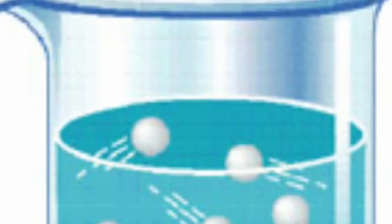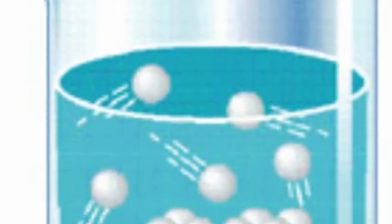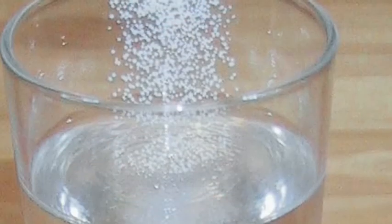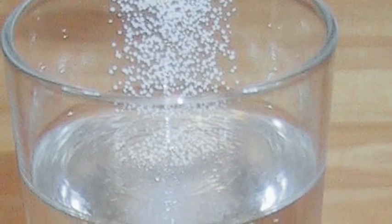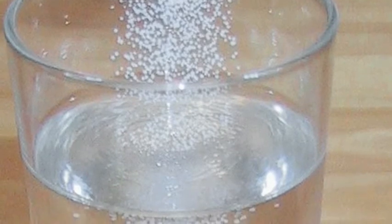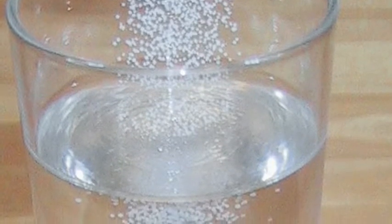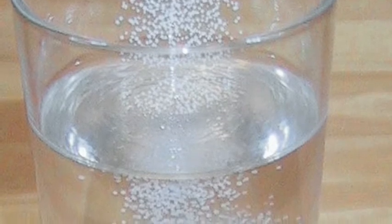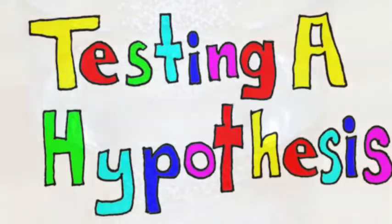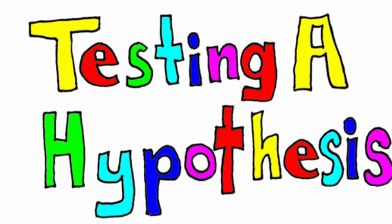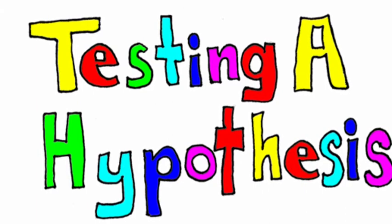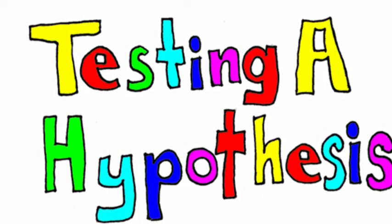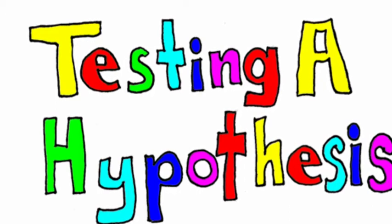In this experiment, we will be testing the dissolving time in seconds of granulated sugar versus cubed sugar. The question in our experiment is: does surface area affect solubility? Our hypothesis is that the larger the surface area, the less time it will take to dissolve.